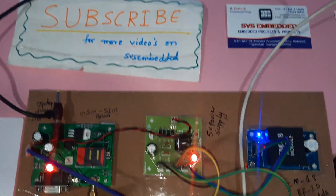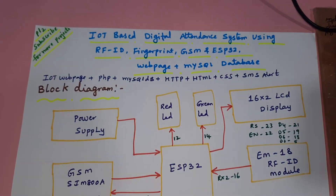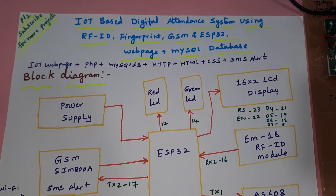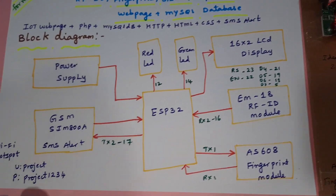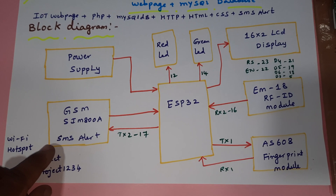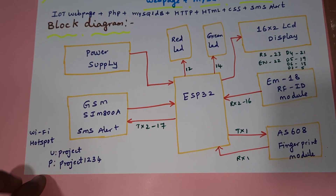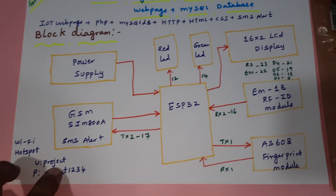The project title is IoT-based Digital Attendance System using RFID, fingerprint, GSM, and ESP32 web page and MySQL database. In this project we are using an ESP32 board, GSM SIM800A, and we require one Wi-Fi hotspot mobile internet — the username is 'project', password 'project1234'.